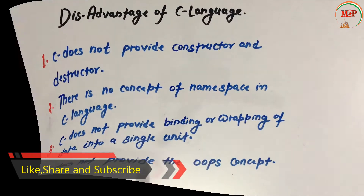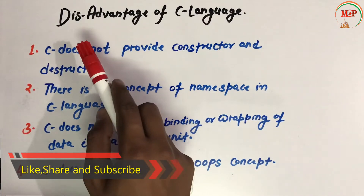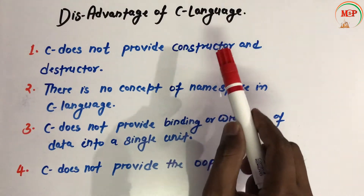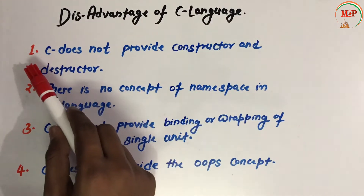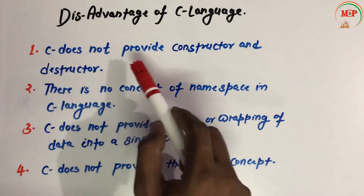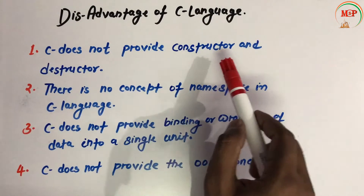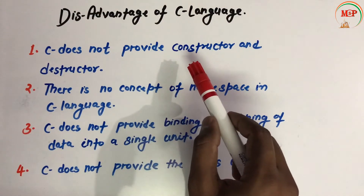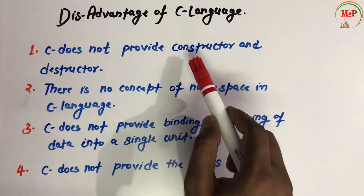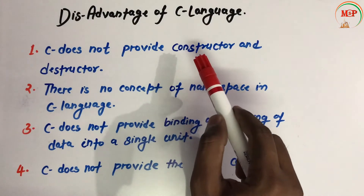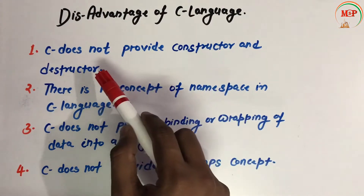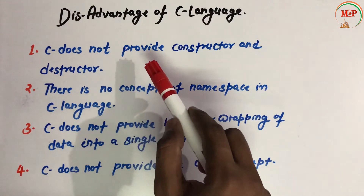Now let's see the disadvantages of C programming language. The first point is that C does not provide constructor and destructor. A constructor is used to construct the memory and a destructor is used to destroy the memory.